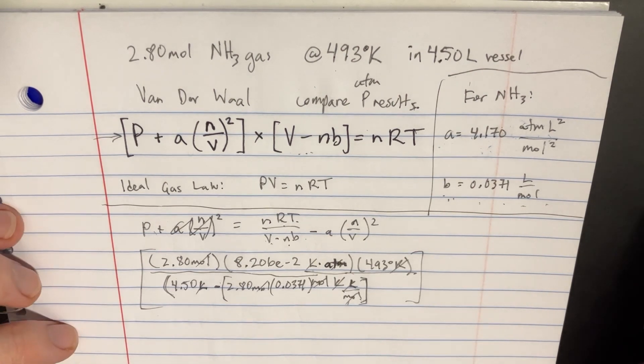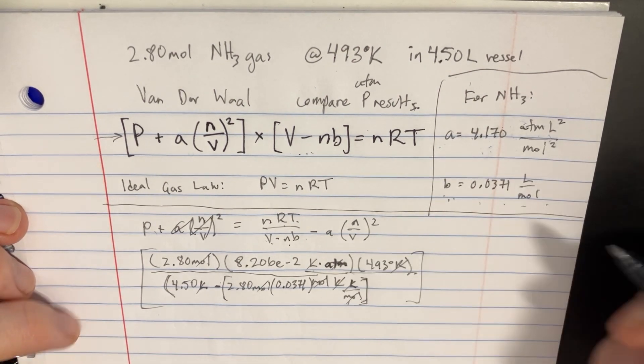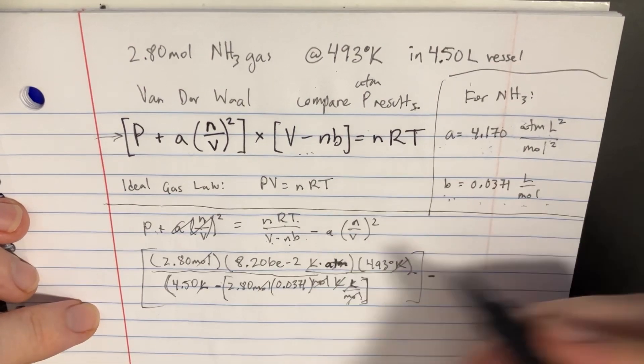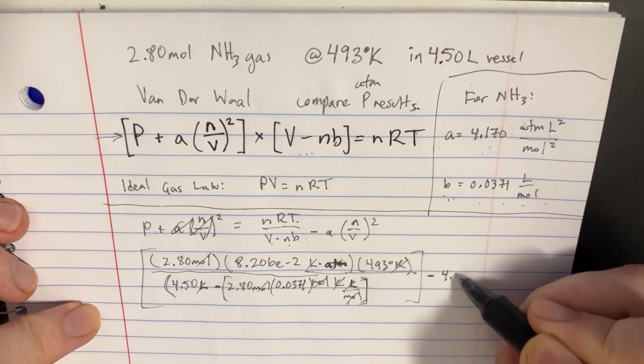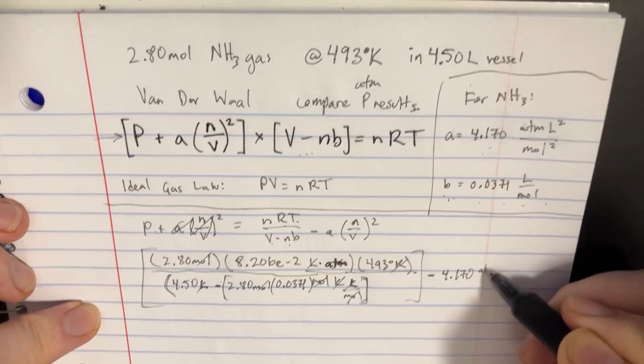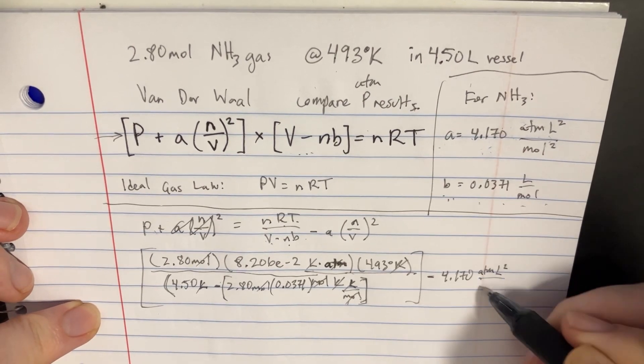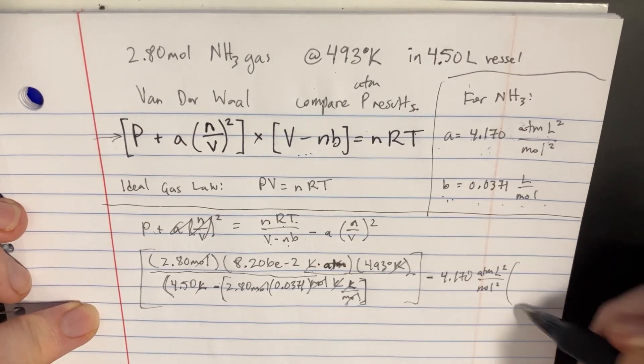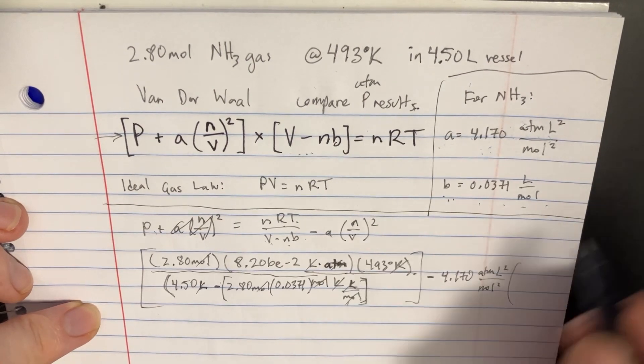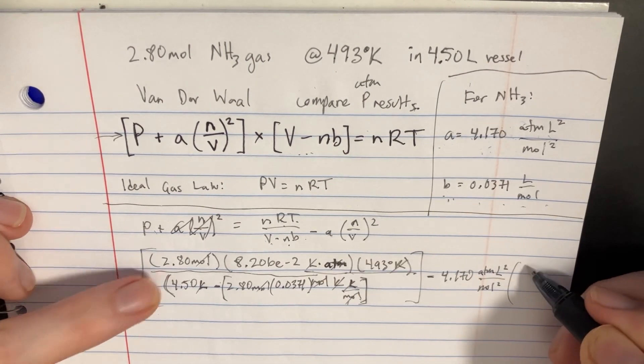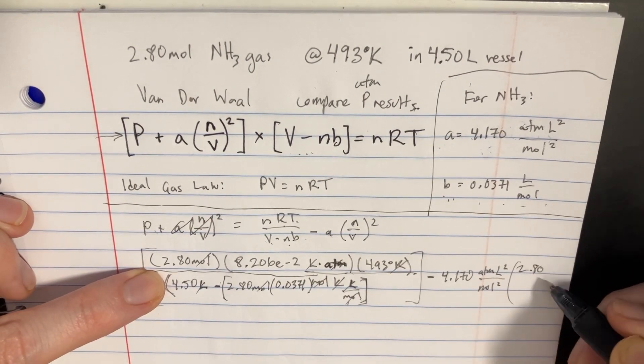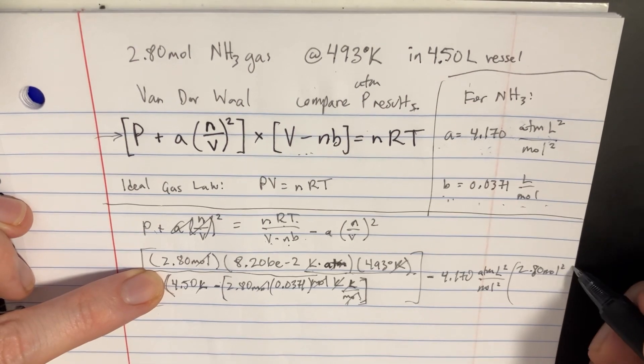But let's go on to this A over here. So the A is just going to be 4.170 ATM liters squared mole squared. And we're going to multiply that by n over V, but I'm going to put the squared inside there. So we would actually have 2.80 mole squared here.